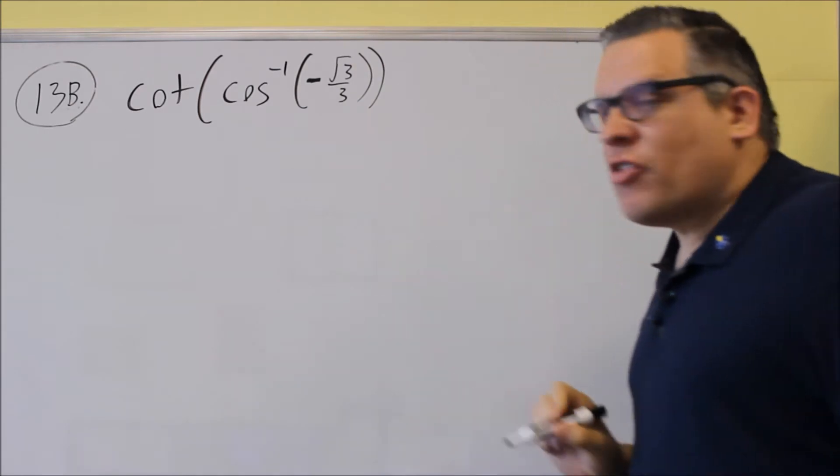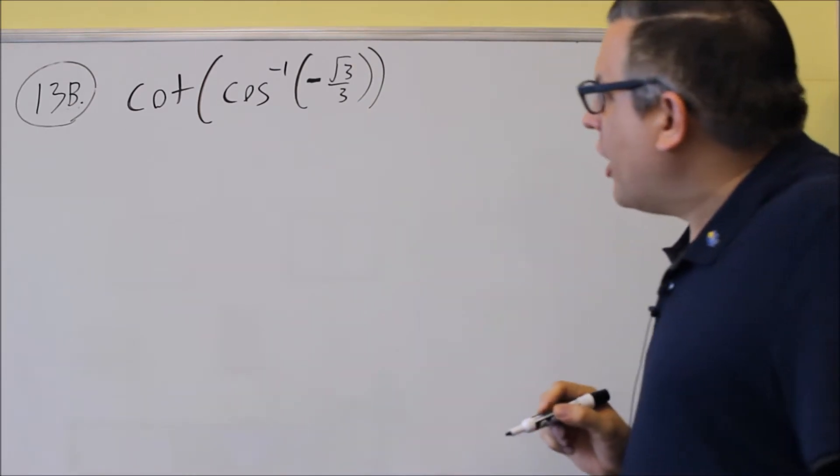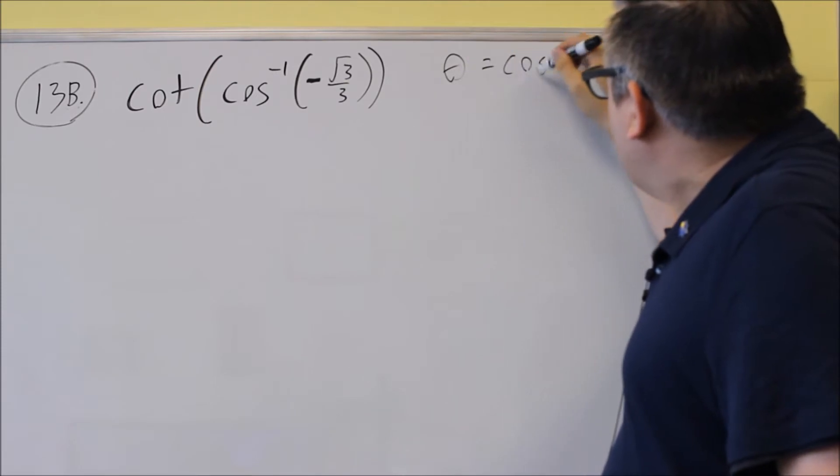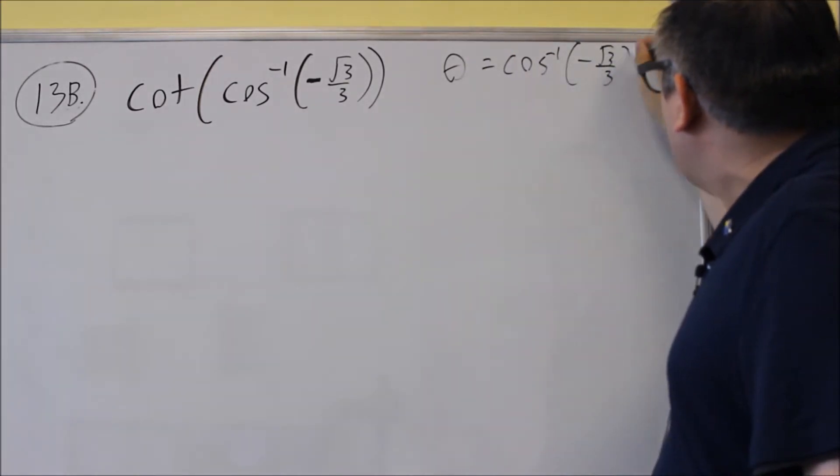The inside one, as I mentioned before, is how you're going to draw the triangle. So, we have that theta is equal to inverse cosine of negative root 3 over 3.